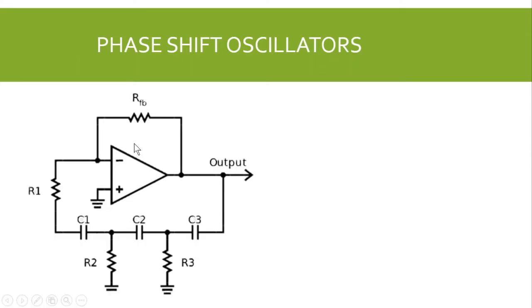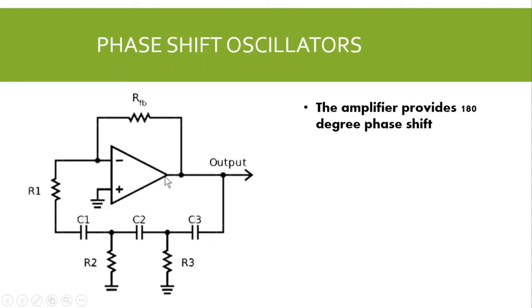This is the circuit of the RC phase shift oscillator. In this RC phase shift oscillator, the RC circuit is used as a feedback circuit. As you can see, three stages of RC circuits are used as the feedback circuit.